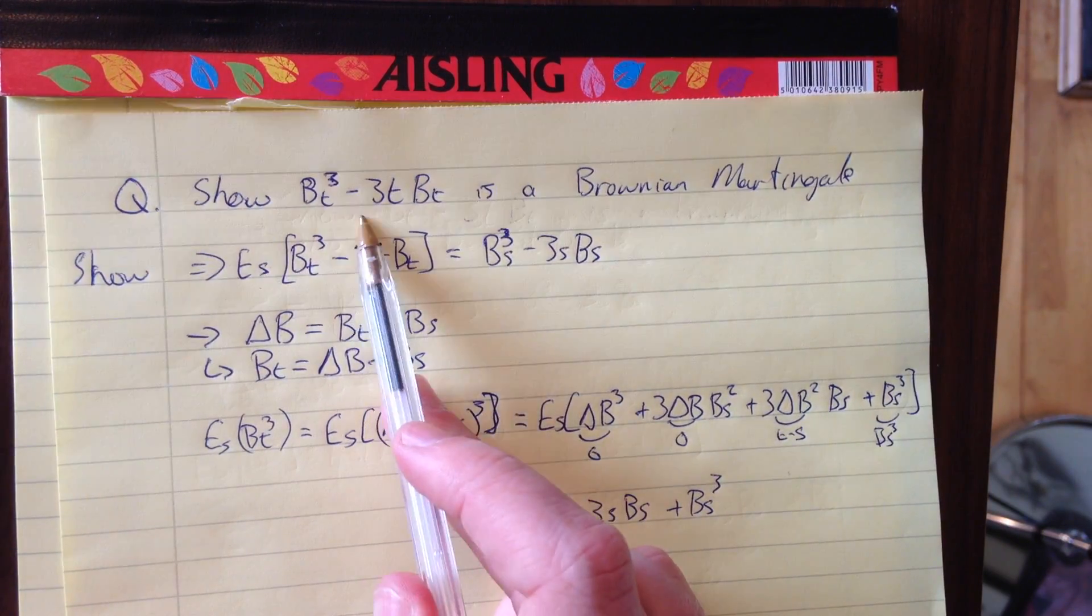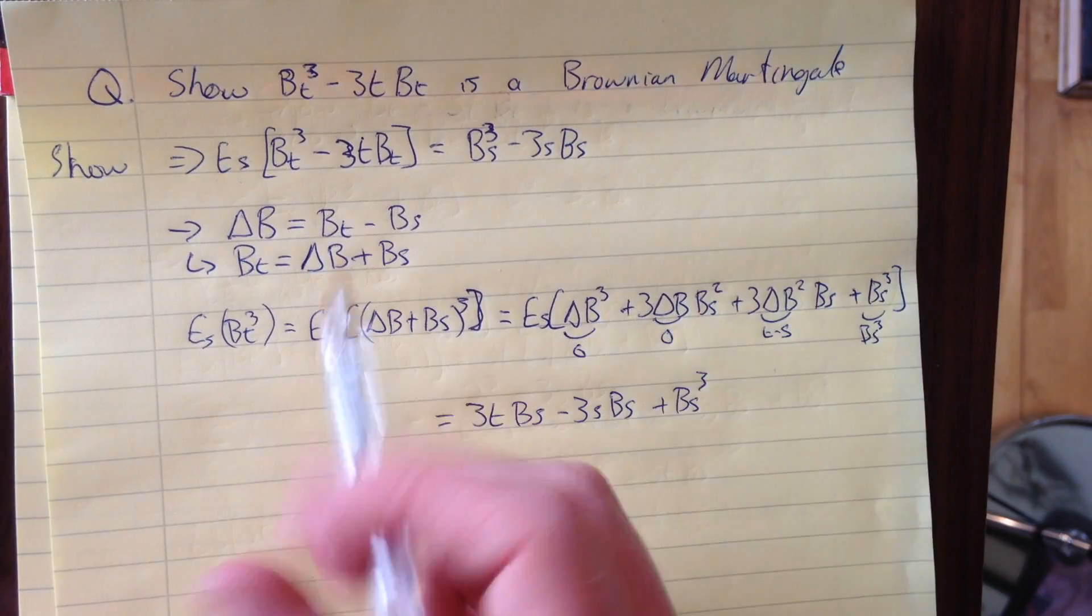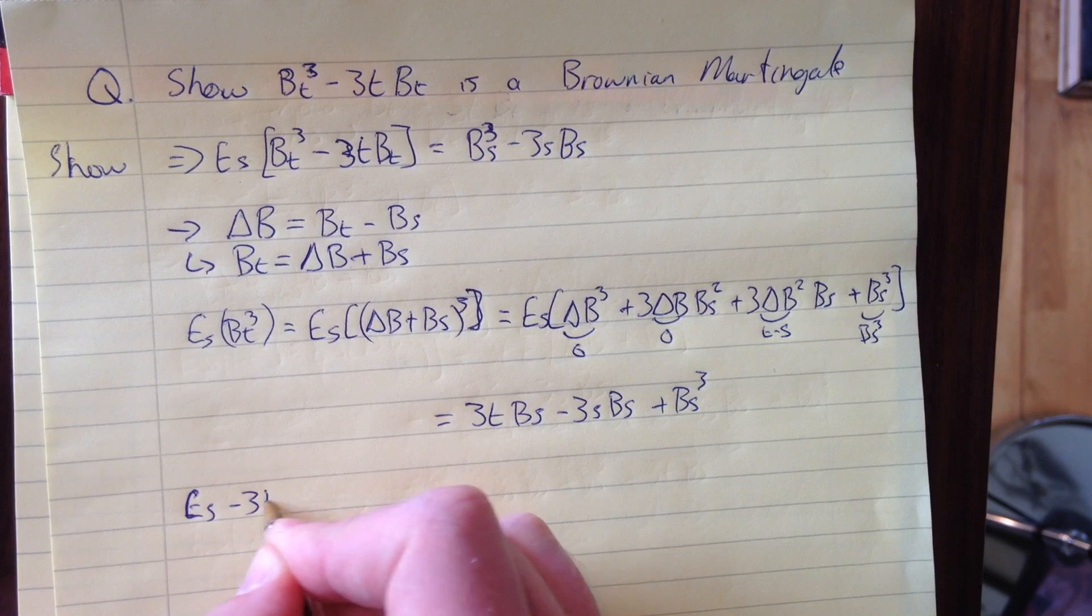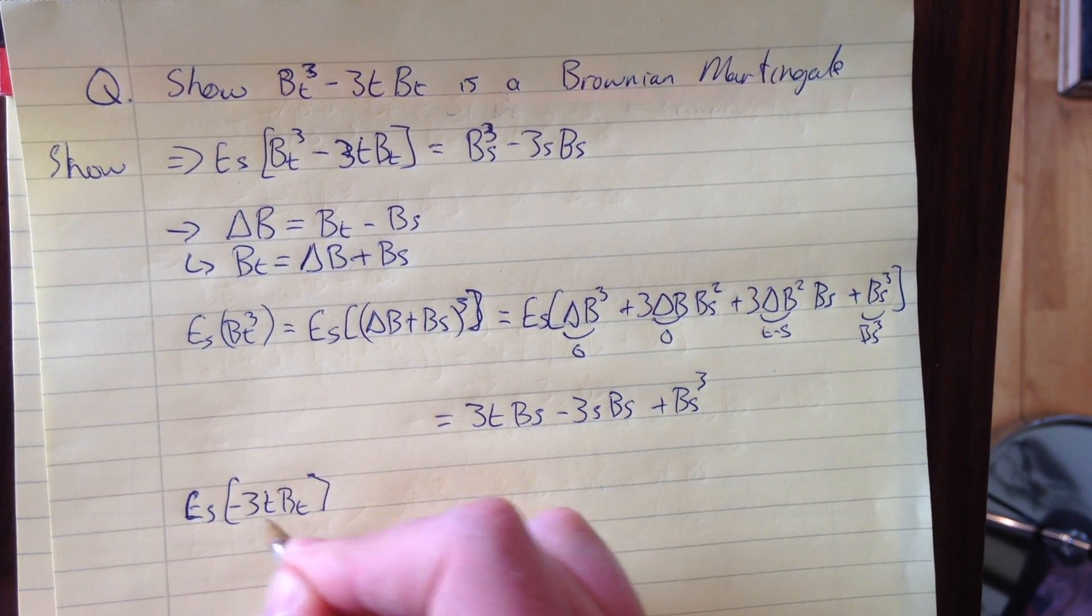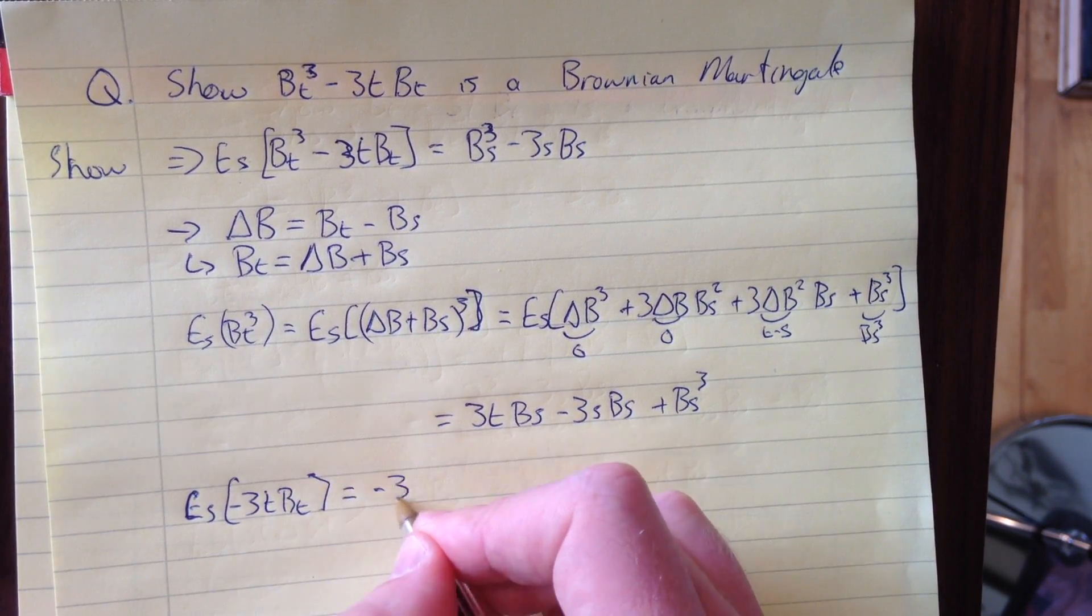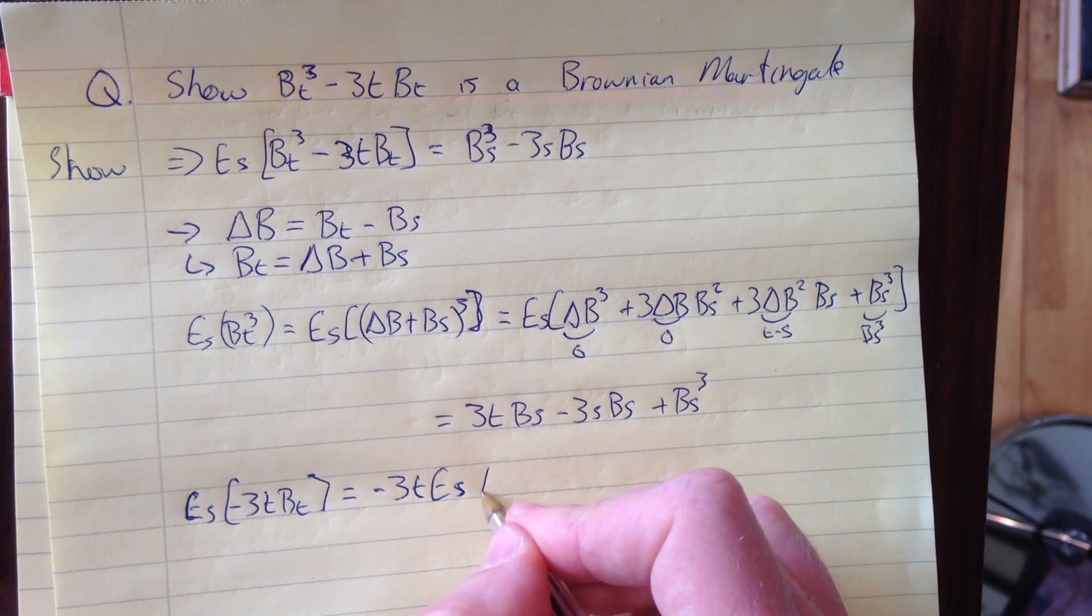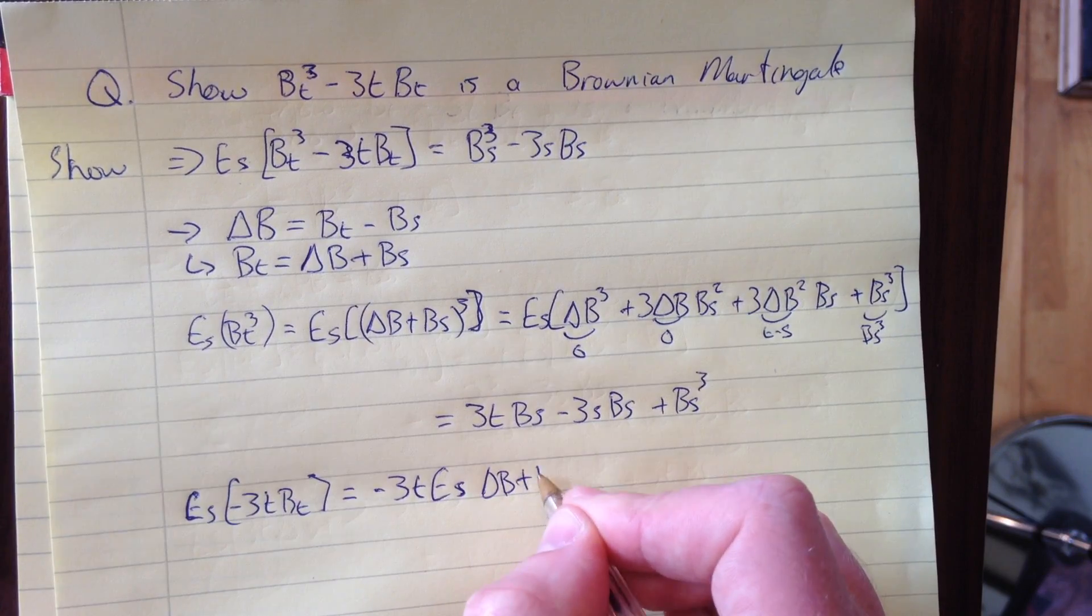Now take the second part, -3tB_t. The expected value of -3tB_t: we can factor out -3t because it doesn't change under the filtration S. Then we have the expected value of B_t, which is delta B + B_s.